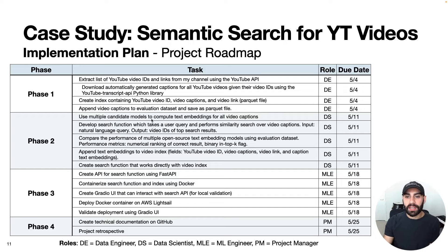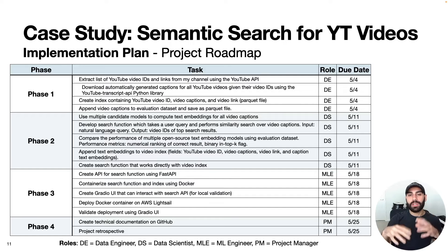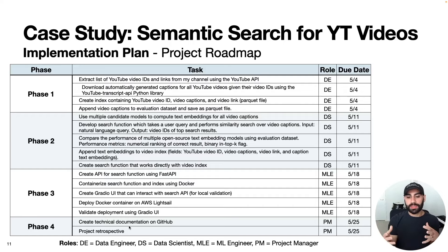Phase one is all the data engineering: extracting transcripts and saving them as a parquet file. Phase two consists of exploring multiple embedding models and testing the search function using the evaluation data set, then creating a searchable video index. Phase three consists of building an API for the search function, containerizing it, testing it locally, building a simple Gradio UI, and deploying it on AWS. Phase four consists of creating the documentation and doing a project retrospective.